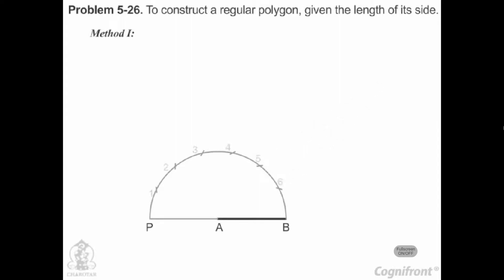Number the division points as 1, 2, etc., starting from B. Draw a line joining A with the second division point 2.